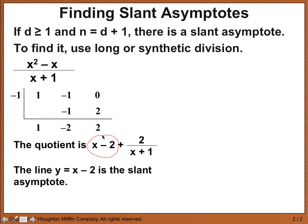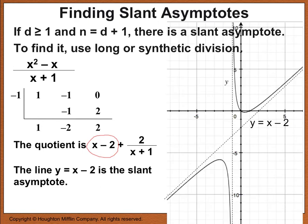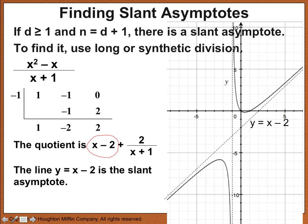The line y equals x minus 2 is the slant asymptote. This non-remainder part of the quotient gives you the equation of a line with a slope and y-intercept. Here, 1 is the slope and negative 2 is the y-intercept. Looking at the graph, we have the line drawn as a dotted line labeled y equals x minus 2. Just as the curve approaches a vertical asymptote but never touches it, so also the curve approaches the slant asymptote but never touches it.